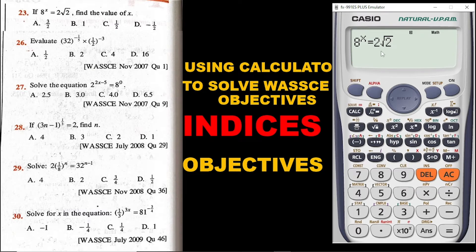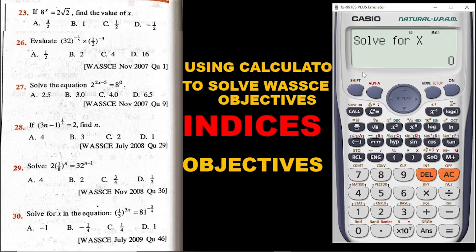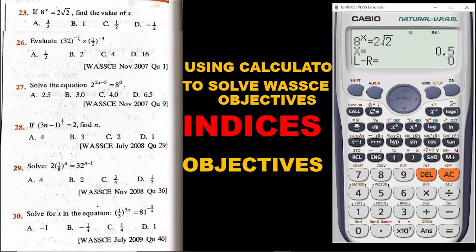Now because in this equation we are having a variable x, when you are done entering your data, kindly go back to the question and cross-check that you have entered exactly the right thing. Once you are satisfied, simply click the shift sign and then you click on solve. The calculator will then ask you what value of x do you want to use. Always let's use the value zero. So you click on zero, hit the equal sign button, and we are getting the answer to be 0.5.